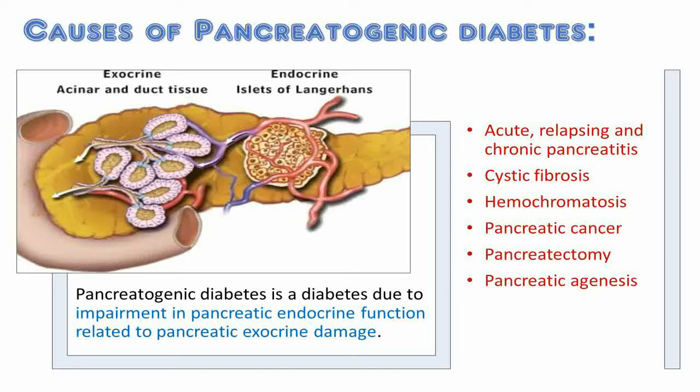This pancreatic exocrine damage can be due to acute, relapsing and chronic pancreatitis, cystic fibrosis, hemochromatosis, pancreatic cancer, pancreatectomy, and some rare causes such as neonatal diabetes due to pancreatic agenesis.